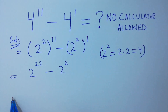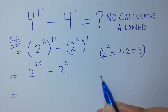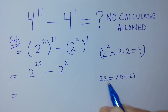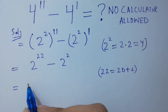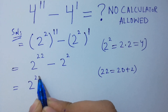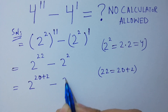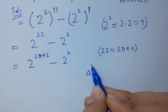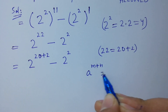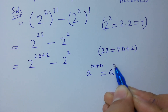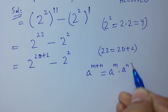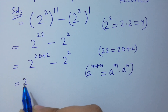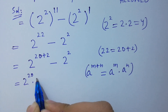2 squared to the power 11 gives us 2 to the power 22, minus 2 squared to the power 1, which remains 2 squared. 2 squared 22 is equal to 20 plus 2, so it will be 2 to the power 20 plus 2, minus 2 to the power 2. Since a to the power m plus n equals a to the power m times a to the power n.